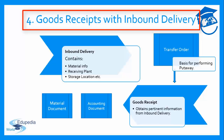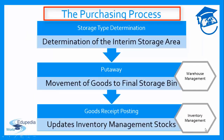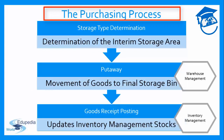Once the goods have been removed from the interim storage area and put away into storage, the final step is to perform a goods receipt posting, which is an inventory management process, and this completes the whole process. Two key points: putaway is a warehouse management process, whereas goods receipt posting is an inventory management process. Performing putaway updates warehouse management stock, while performing a goods receipt posting updates inventory management stock.